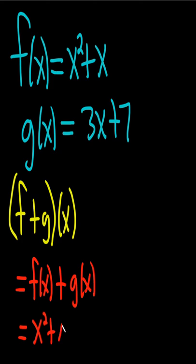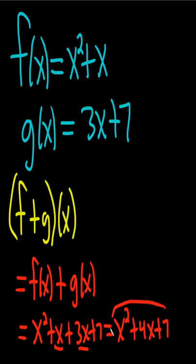x² + x, that's your f, and then your g is 3x + 7. Then you just combine like terms. We have x², x + 3x is 4x, and then we have our +7 hanging out at the end.